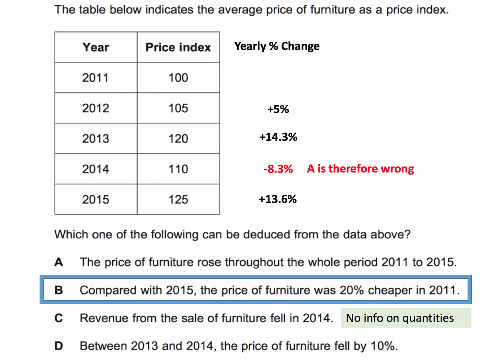Option C: revenue from the sale of furniture fell in 2014. Well, revenue is the multiplication of price times quantity, and we're not given any information on the quantities of furniture sold. Therefore we cannot deduce anything about revenue from the sale of furniture in 2014. We know the price index fell by 8.3%, but we don't know what happened to the amount of furniture sold.